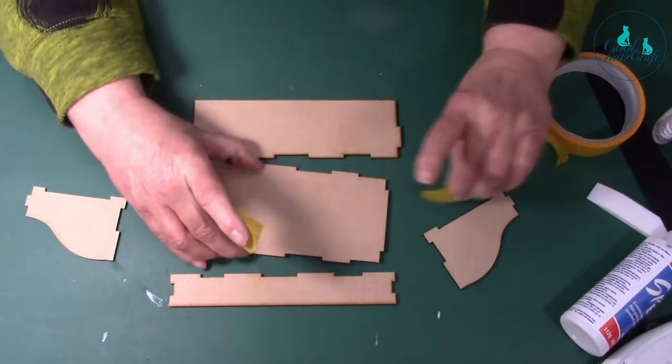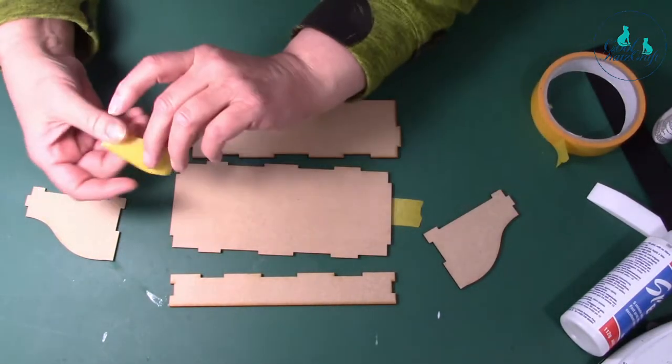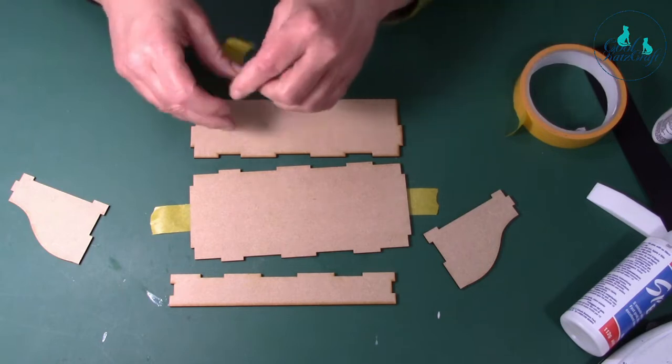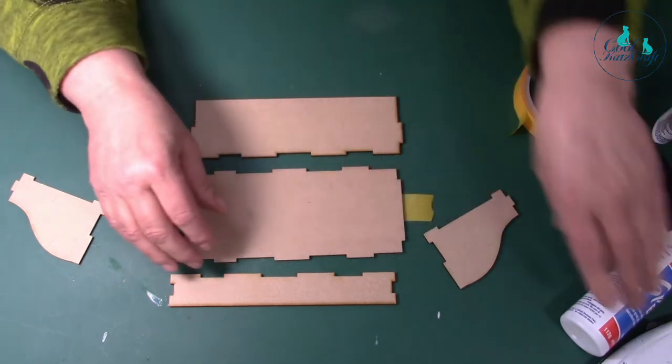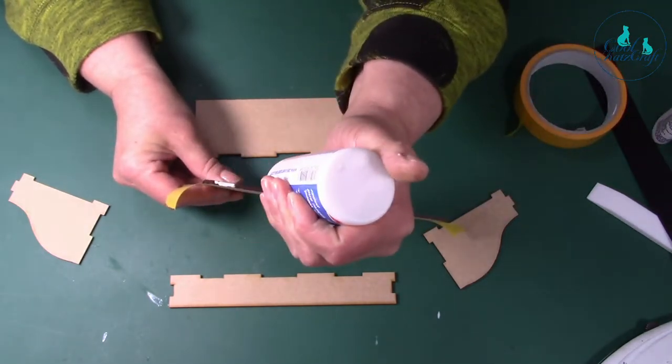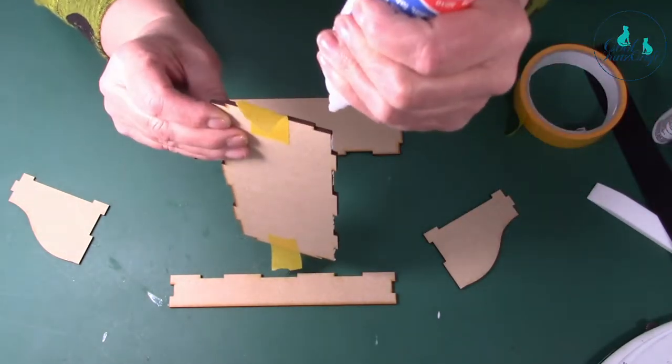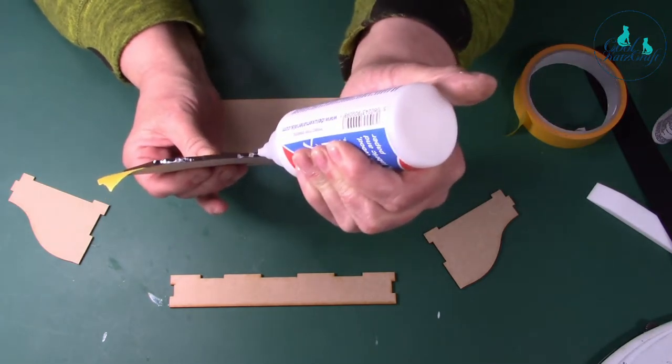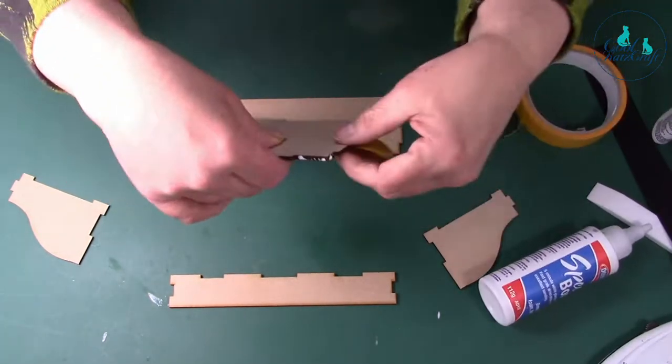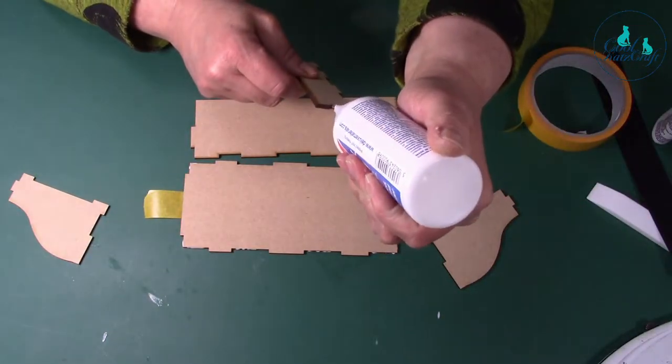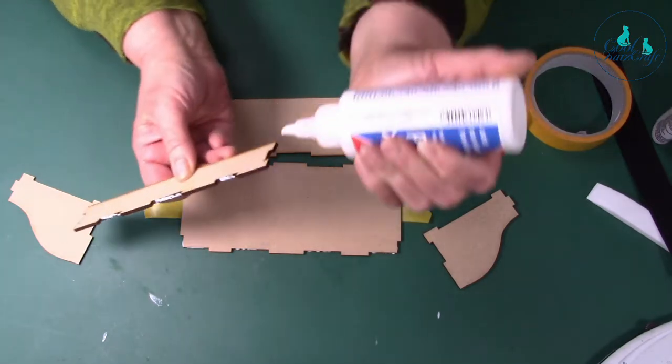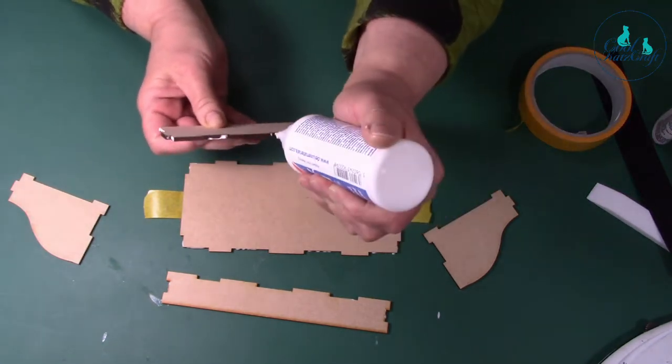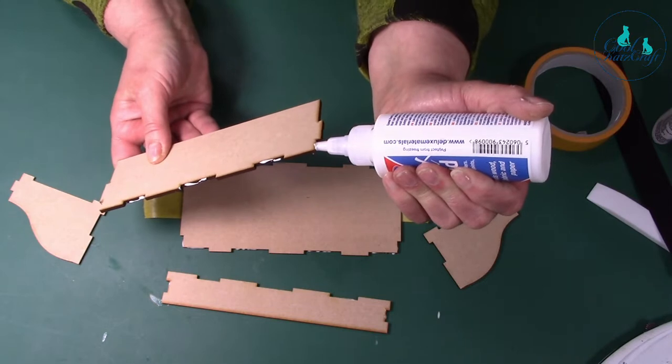I will use a little bit of tape for this because it's easier on the sides. I'll put the glue on the recessed bits. It takes longer to put the glue on than to actually put it together.